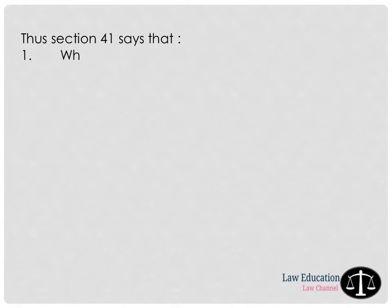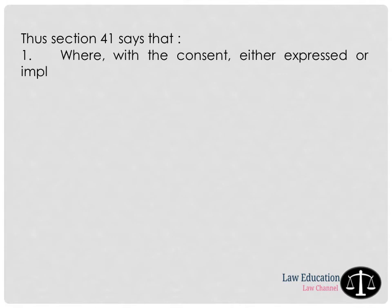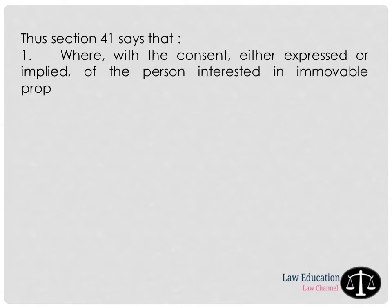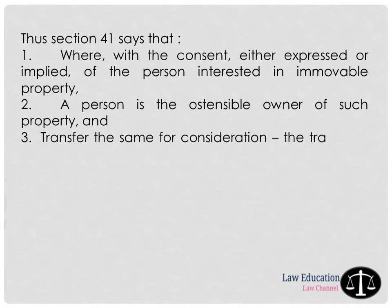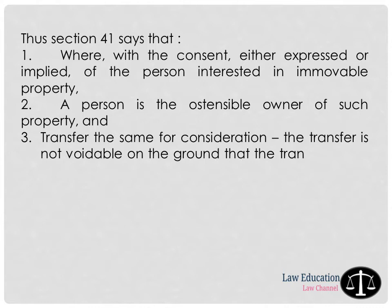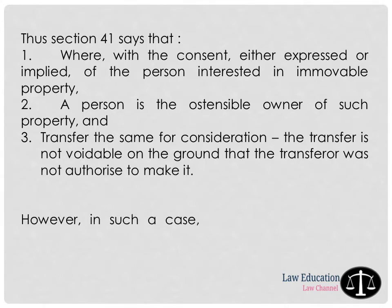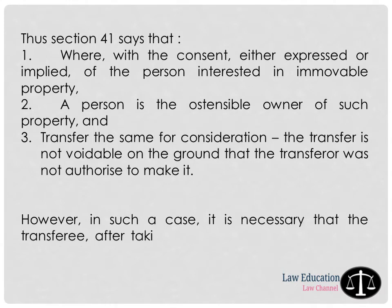Section 41 states that where, number one, with the consent either expressed or implied of the persons interested in immovable property, number two, a person is the ostensible owner of such property, and number three, transfers the same for consideration, the transfer is not voidable on the ground that the transferor was not authorized to make it. However, in such a case, it is necessary that the transferee, after taking reasonable care to ascertain that the transferor had power to make the transfer, must act in good faith.